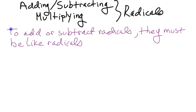By like radicals — you don't have to like radicals to have like radicals. Like radicals is like like terms. If we're adding or subtracting in algebra, 3x plus 2x we can do, get 5x. 3x plus 2y we can't do — they're not like terms.